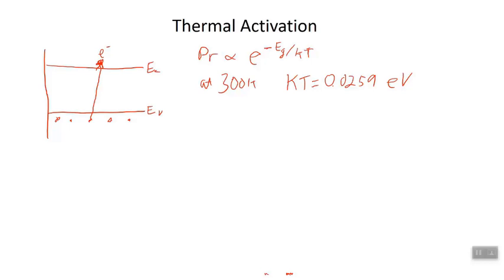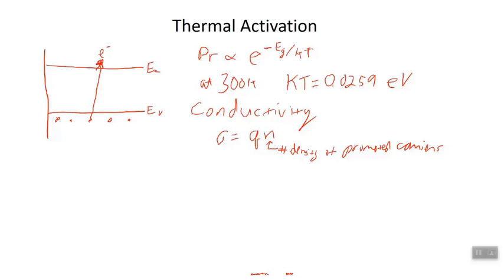A semiconductor becomes conducting when you get more electrons up in the conduction band. So conductivity depends on how many electrons are up there. We talk about how many electrons per unit volume have made it into the conduction band. For conductivity — the Greek letter sigma — it's Q times N. The author of our textbook uses the letter Q for 1.6 times 10 to the minus 19 coulombs, so we will use Q as well. N is the number density of promoted carriers — number per unit volume of electrons that made it into the conduction band, above E sub C. In this course we use cubic centimeters as our unit of volume.